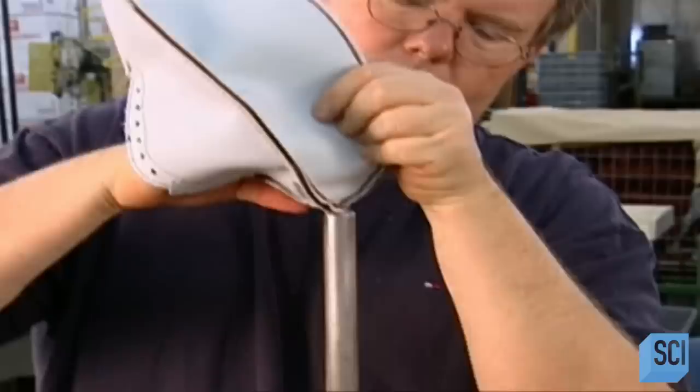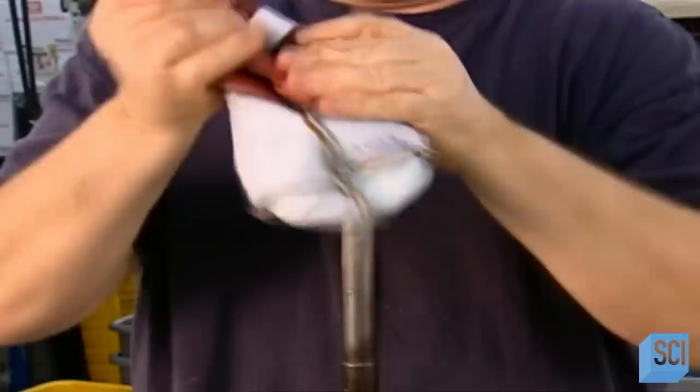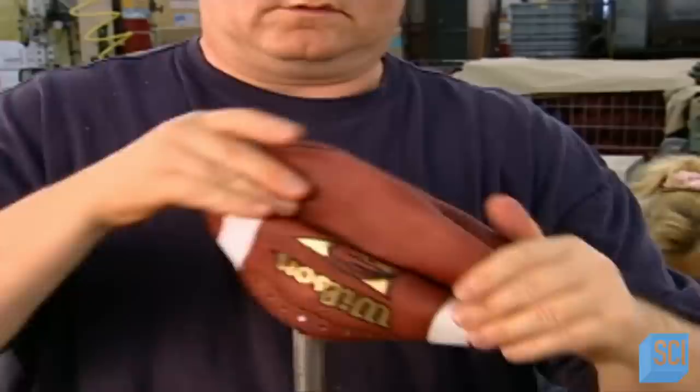Time to turn the skin right side out. A worker places it on a metal bar, then reaching through the opening between the lace holes, he grabs the other side of the skin and pulls it through. Then he runs the bar along the inside to reshape the skin.